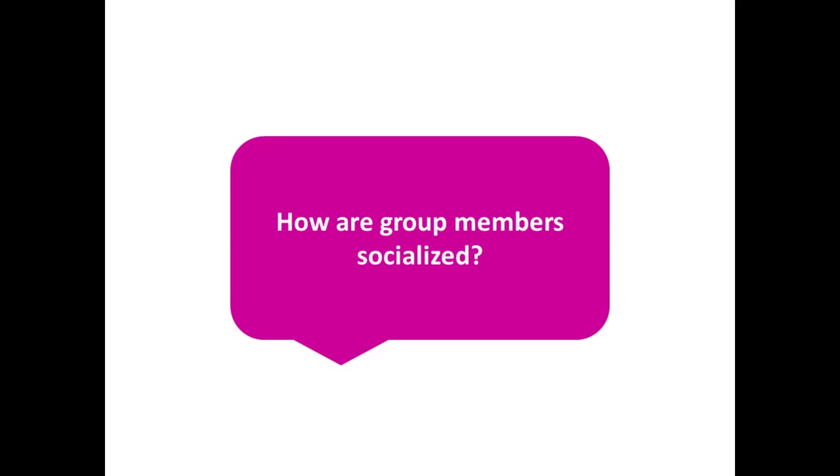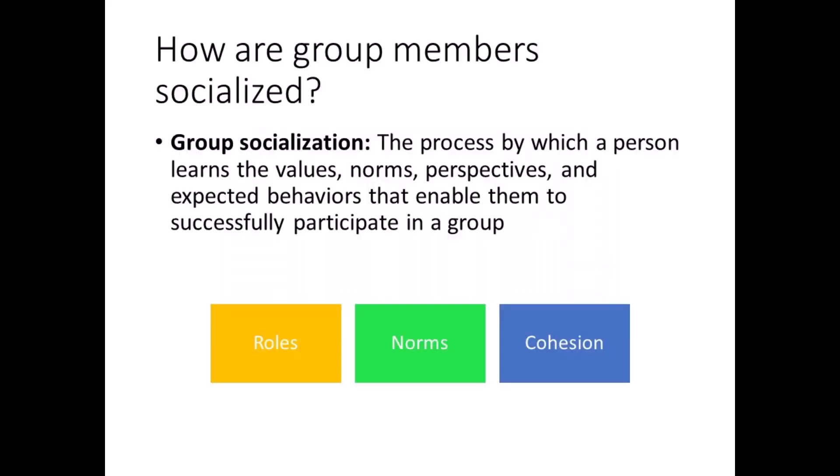How are group members socialized? Once a group forms, or once an individual joins a group, the process of socialization begins. This is how a person learns the values, norms, perspectives, and expected behaviors of a group, all of which enable them to successfully participate.